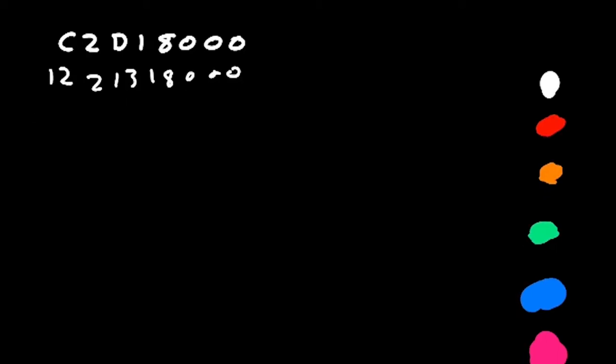So, converting this to binary, we have 1100, which is 12, and 0010 for 2, 13 is 1101, 1 is 0001, 8 is 1000, 0 is 0000, and we have 8 more 0s, remaining 2 0s. And this is our binary representation of hexadecimal.